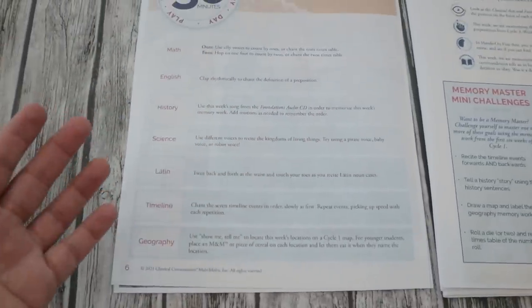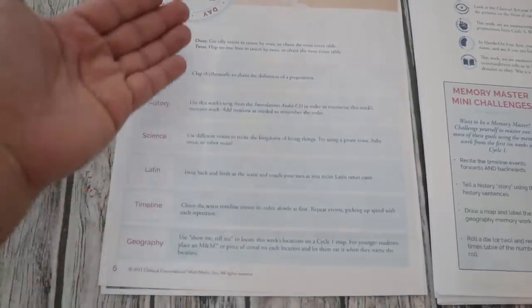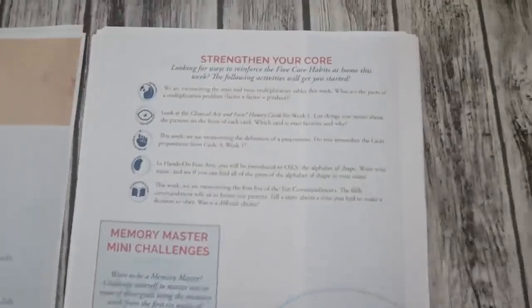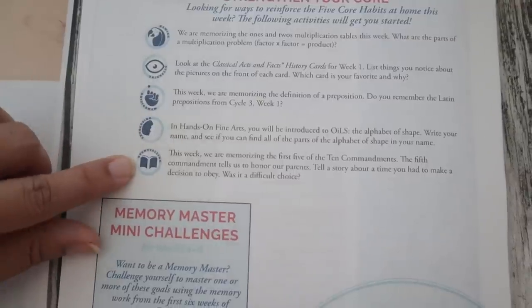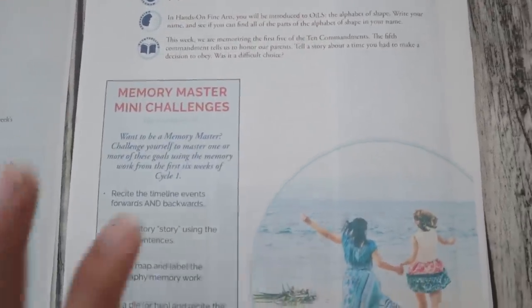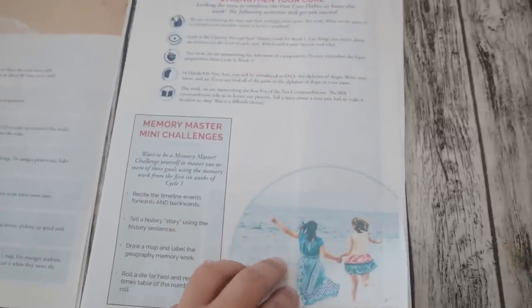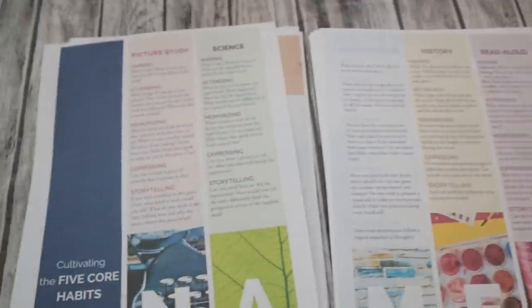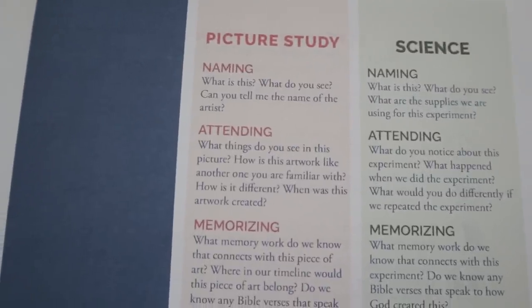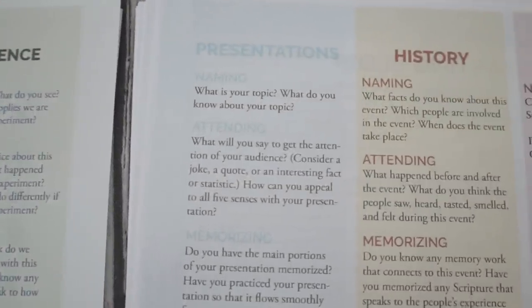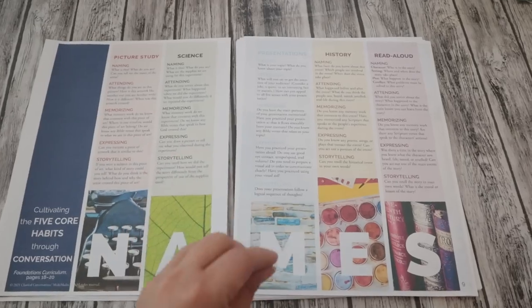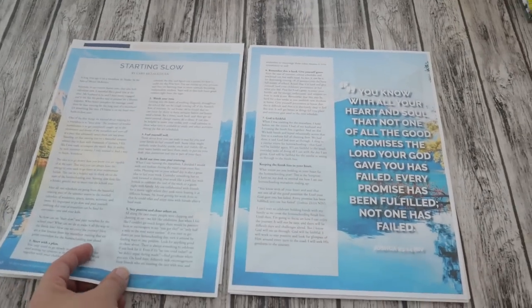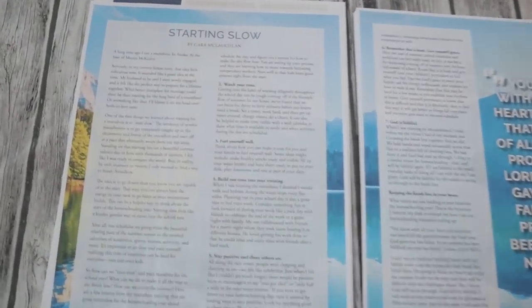There's a 'strengthen your core' section covering the five core values: naming, attending, memorization, expressing, and storytelling. If your kid wants to be a memory master, this will help. It shows you how to use the five core habits with picture study, science presentations, history, and read-aloud — step by step how to ask questions to your kids, which is helpful because I was like, what does that mean, 'five core habits'?